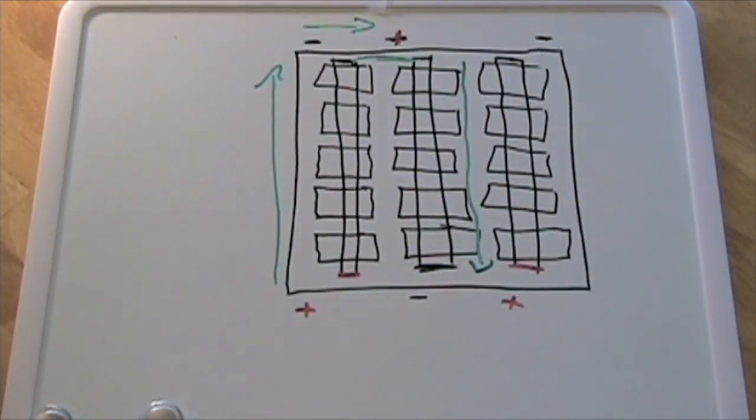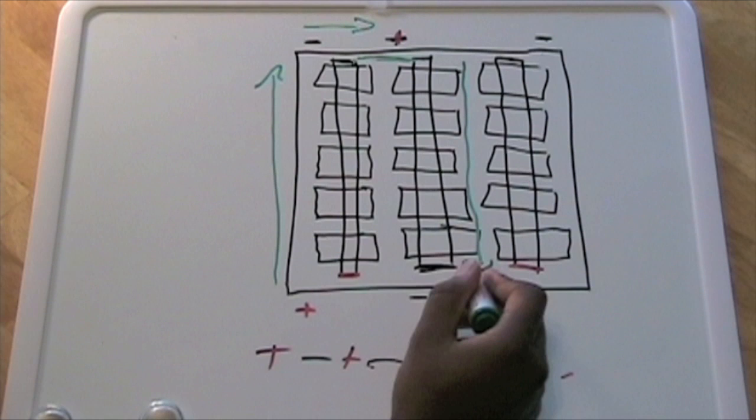As you can see now, it's going from positive to negative, positive to negative. That's what you want to do when you're trying to go in series - you're going from positive to negative, positive to negative, and positive, etc.